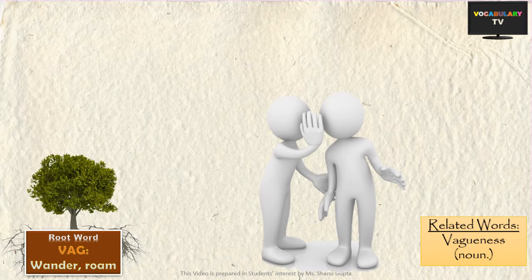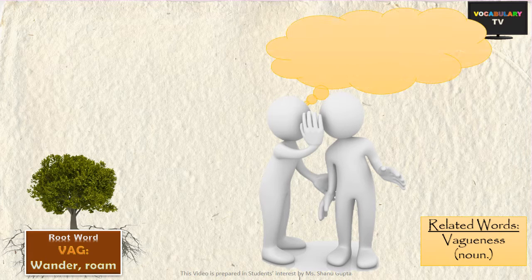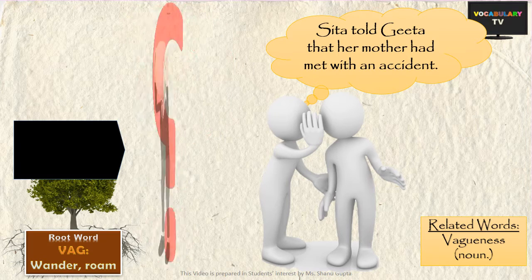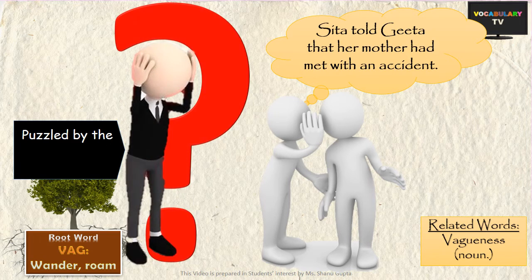You might even encounter sentences in English which are not clear in meaning or intention. For example: 'Sita told Gita that her mother had met with an accident.' Whose mother had the accident — Sita's or Gita's? It is not clear from this sentence, so this sentence is very vague. The related noun is 'vagueness,' and we can see that the listener is puzzled by the vagueness of the Sita–Gita conversation.